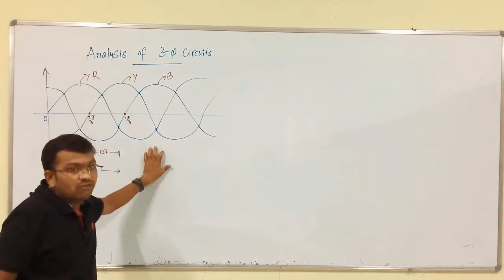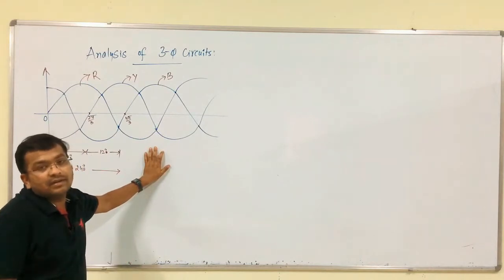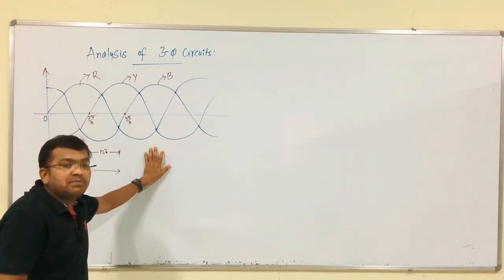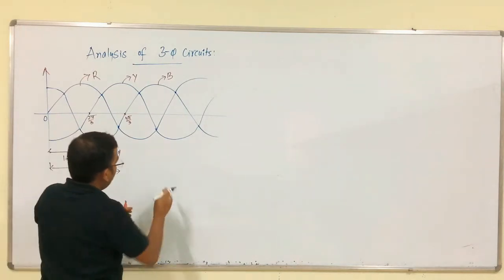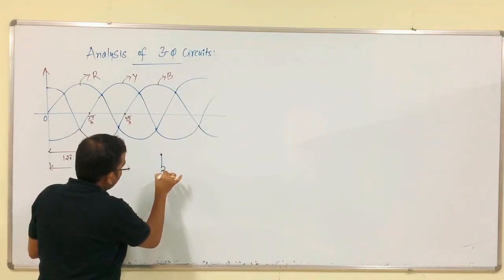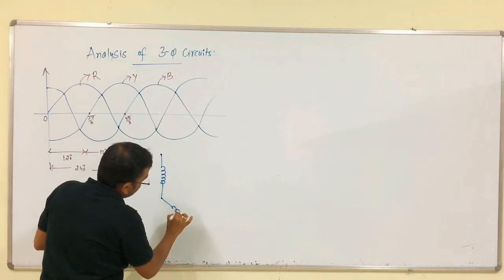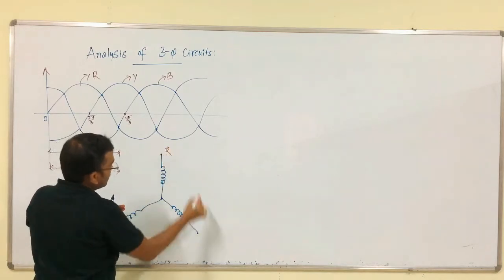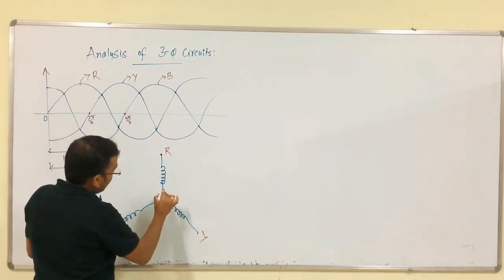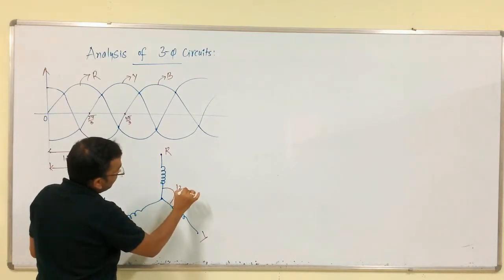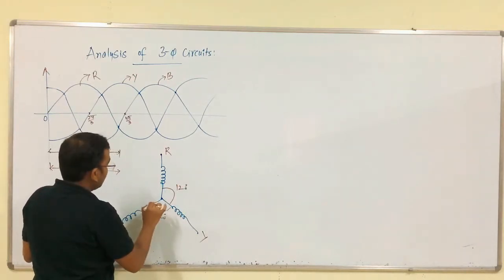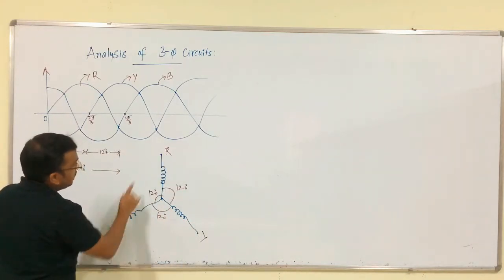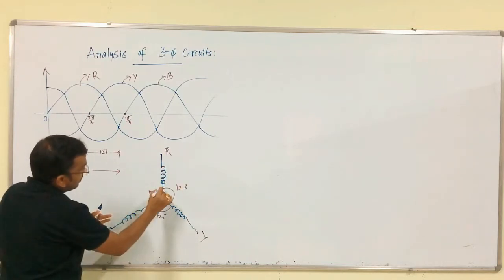We are going to get this voltage waveform from an AC generator. In this AC generator, the three windings are displaced by 120 degrees apart. For example, if we consider star, this is one winding, this is another winding, and this is also another winding. This is R phase, this is Y phase, this is B phase, and the displacement between any two phases is 120 degrees. Between R to Y: 120, Y to B: 120, B to R: 120, but R to B: 240.